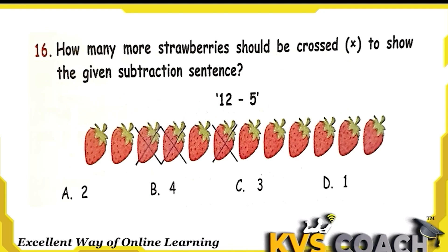The next question: how many more strawberries should be crossed to show the given subtraction sentence 12 minus 5? Total strawberries are 12. We should cross 5 strawberries. Already 3 strawberries are crossed, so we need to cross 2 more — the 4th and 5th. Option A is the right answer.